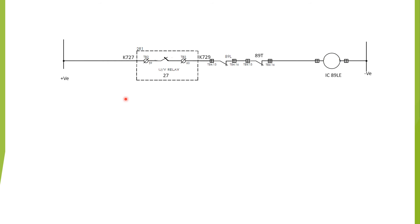In this diagram the interlocking coil for the line earthing switch has been shown. There exist three NC contacts: one is the under-voltage relay NC contact (27), another is the 89L line isolator NC contact, and another is the 89T transfer bus side isolator NC contact. If all three conditions are fulfilled, only then will the interlocking coil be energized and we can operate the line earthing switch electrically.